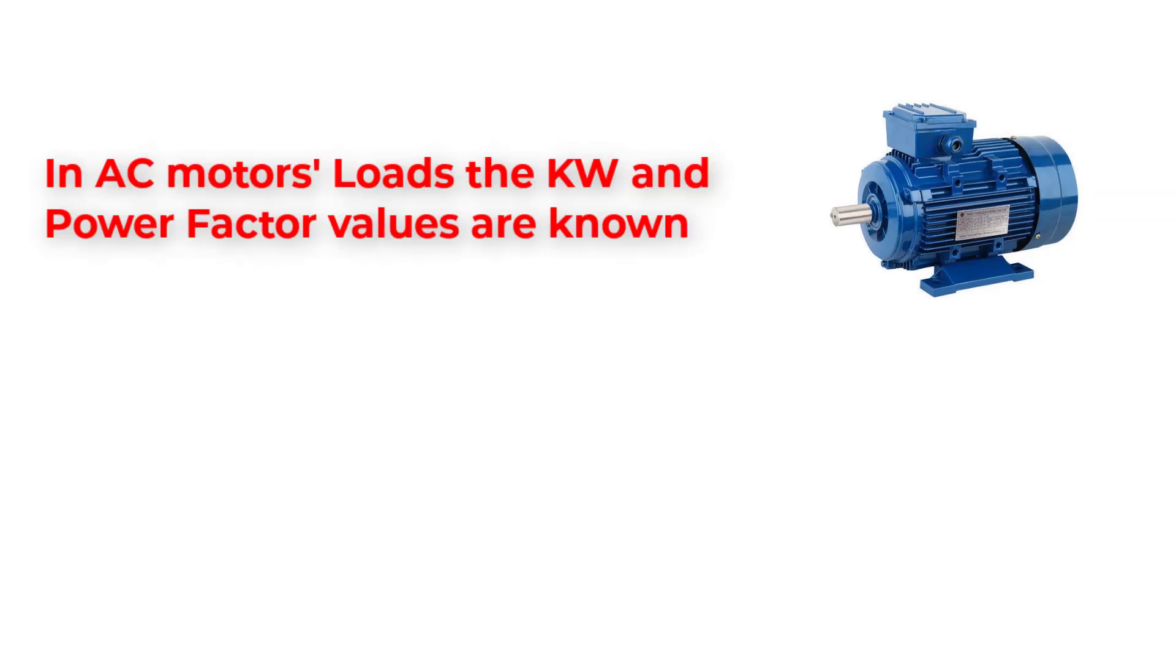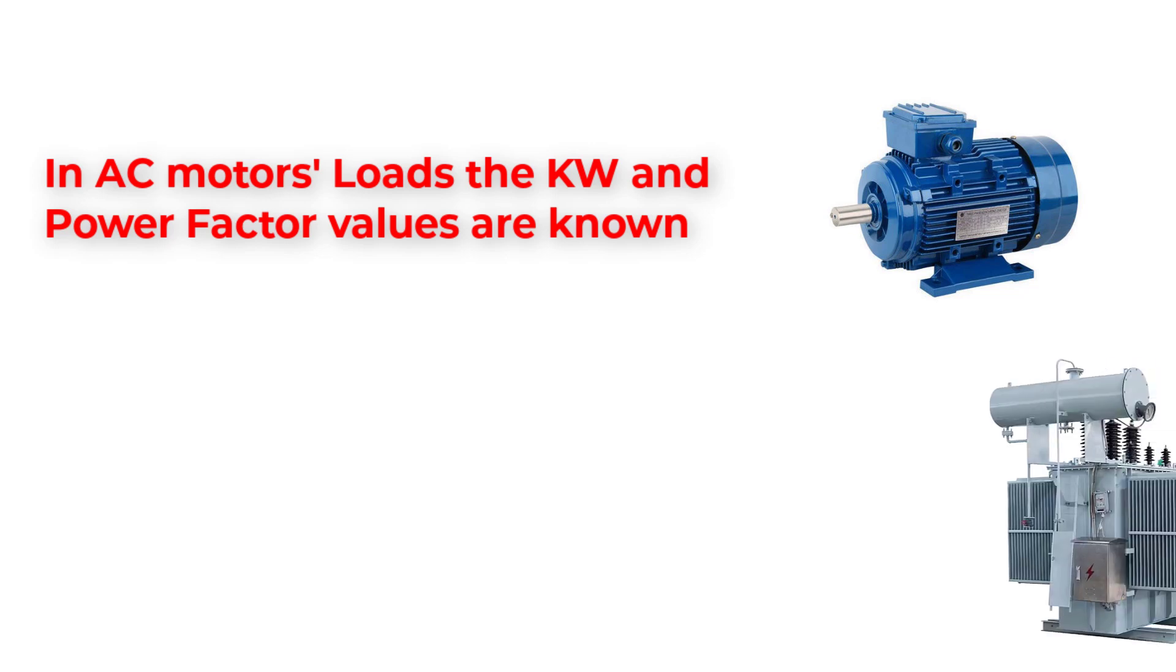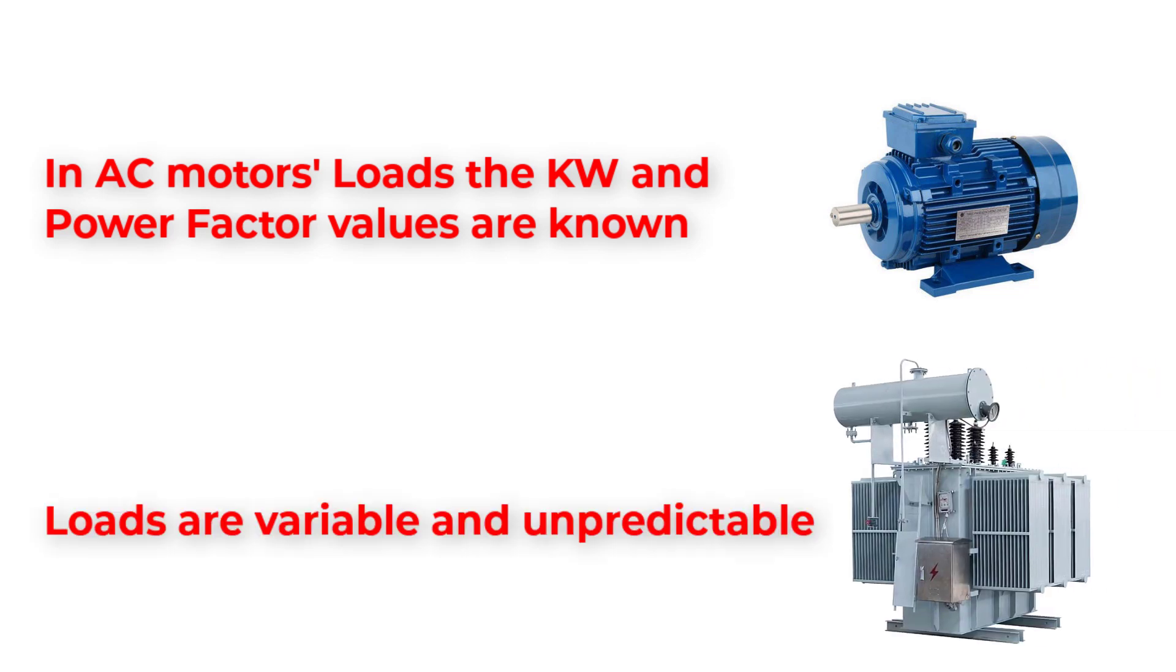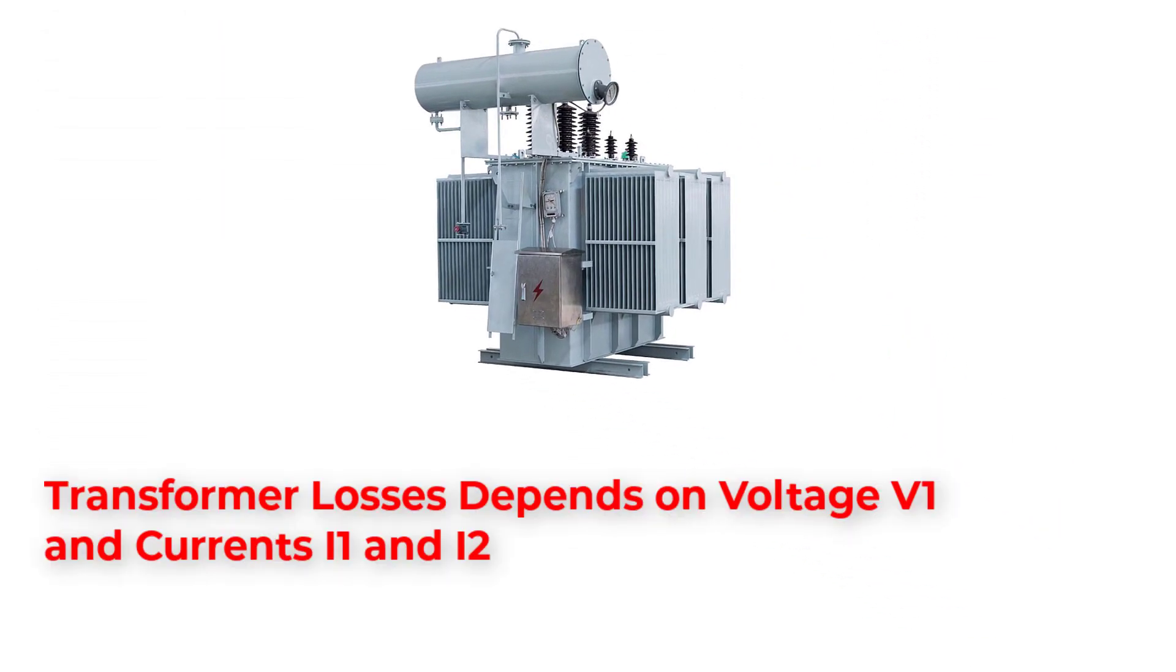Let's make a recap here. AC motors are loads that we know its power factor, so we can express its rated power in kilowatt. But for transformers, we cannot expect the power factor of the load. So, we deal with the total power kilovolt ampere. And also, the losses of transformer depends on the volt times amps.